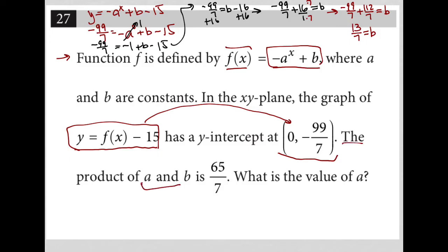I'm then told that the product of a and b is 65 over 7. So that means a times b equals 65 over 7. I know that b is 13 over 7, so this turns into 13 over 7 times a equals 65 over 7.